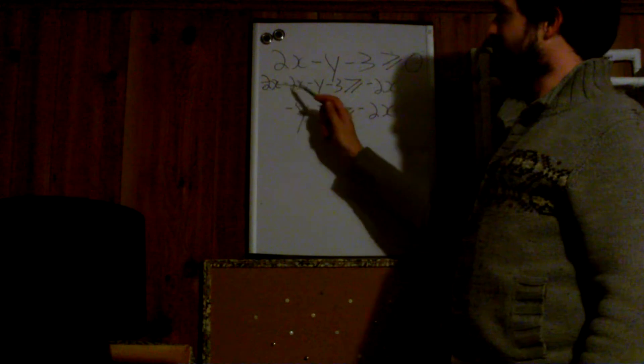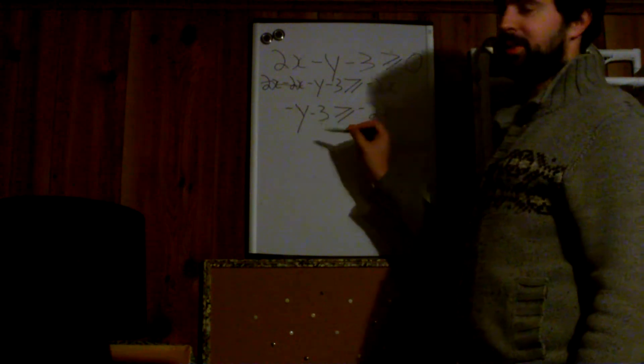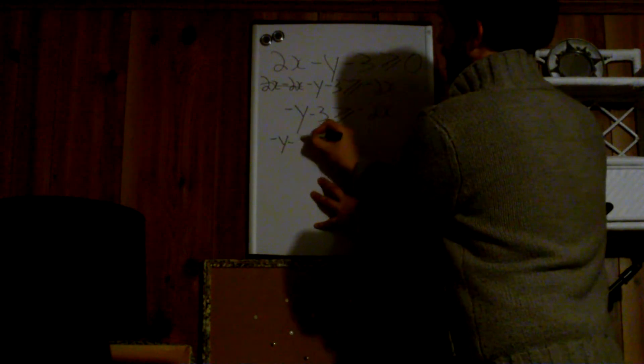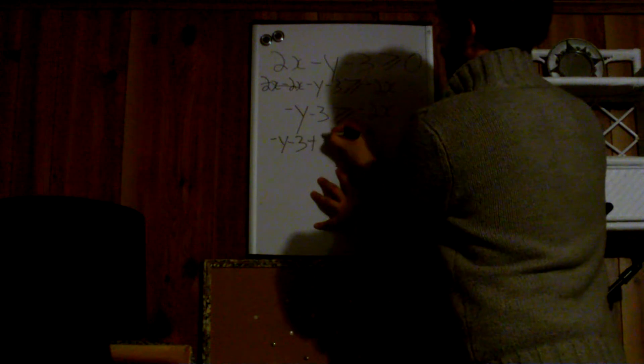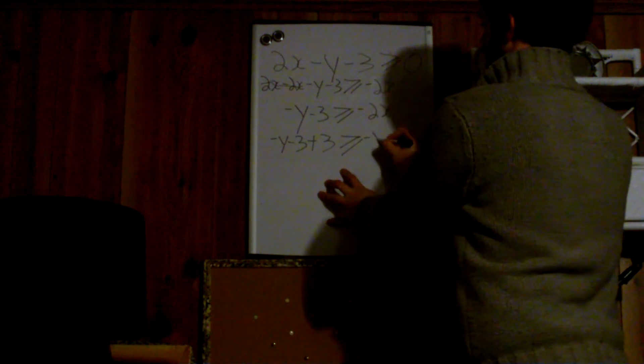Up here we subtracted 2x because we had a positive 2x. We don't want to get rid of the negative 3, we have to add positive 3, and we do it on this side and we do it on the other side.